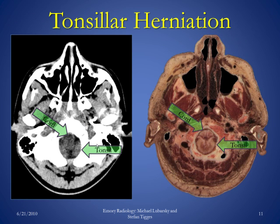Another herniation type is tonsillar herniation, where the tonsils herniate into the foramen magnum, thereby occupying the space within the foramen magnum and often compressing the spinal cord. On this image, you can see the spinal cord outlined more anteriorly and cerebellar tonsils outlined more posteriorly. On the anatomic image, you can see significant compression of the spinal cord by the cerebellar tonsils.